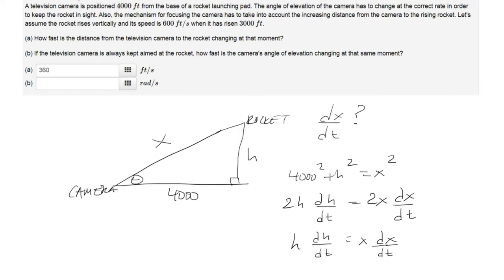We're assuming the rocket rises vertically and its speed is 600 feet per second, so that's another way of saying dh/dt. And it has risen 3,000 feet, so that is h, the height of the rocket. Let's plug that in.